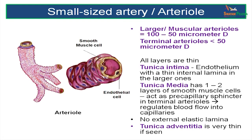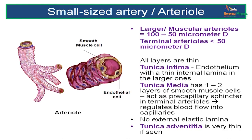The last type are the small-sized arteries, also called arterioles. These divide into two types: larger muscular arterioles, 100 to 50 micrometers in diameter, and smaller terminal arterioles, less than 50 micrometers in diameter. All their layers are thinner. The tunica intima is thin with an endothelium and a very thin internal elastic lamina in the larger arterioles. The tunica media may have just one or two layers of smooth muscle cells. These act as precapillary sphincters in the terminal arterioles and regulate blood flow into the capillary plexus. There is no internal elastic lamina and the tunica adventitia is very thin or absent.